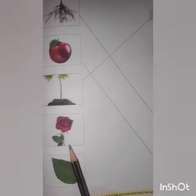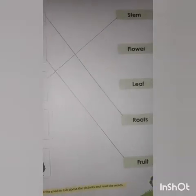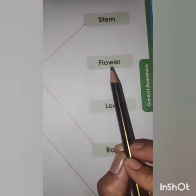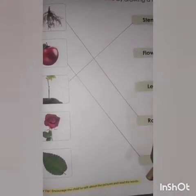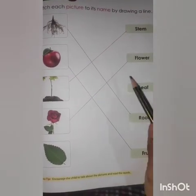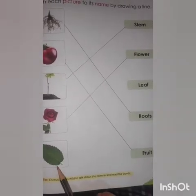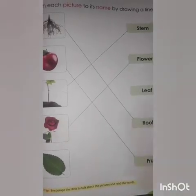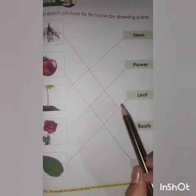Now what is this? Yes, this is a flower. Spelling of flower: F-L-O-W-E-R. Match the picture with its name. Done? Now what is this? Yes, leaf. L-E-A-F. Done? This is how you have to do this work.